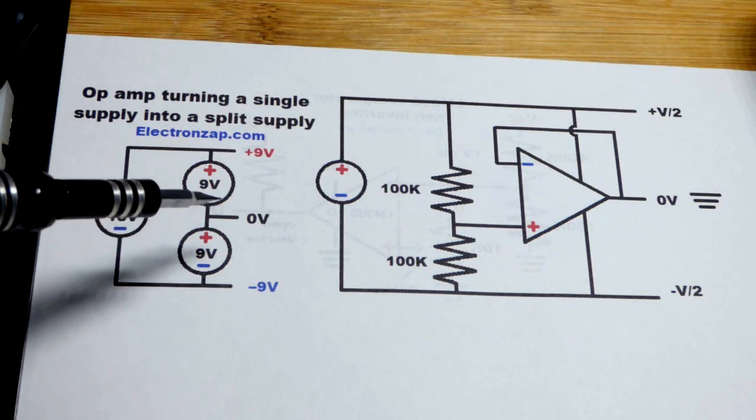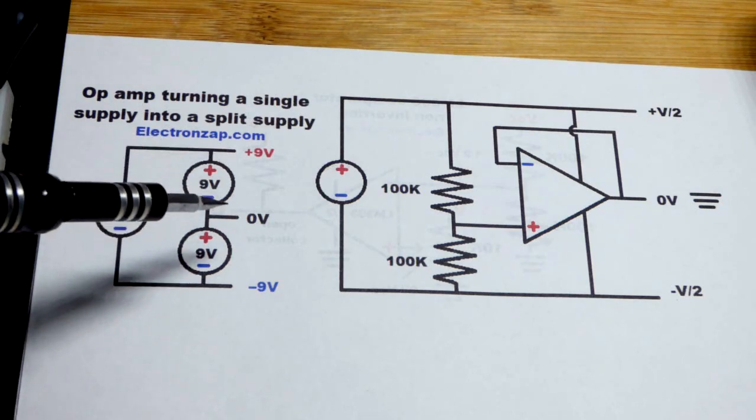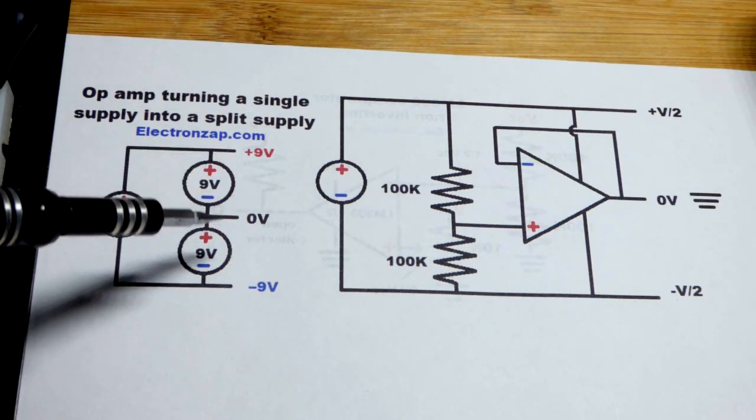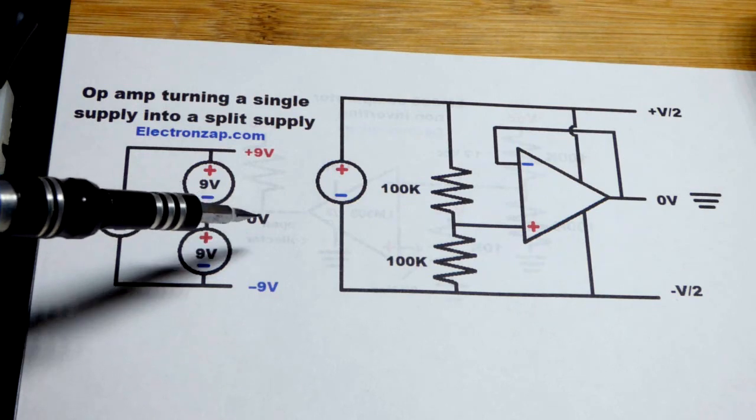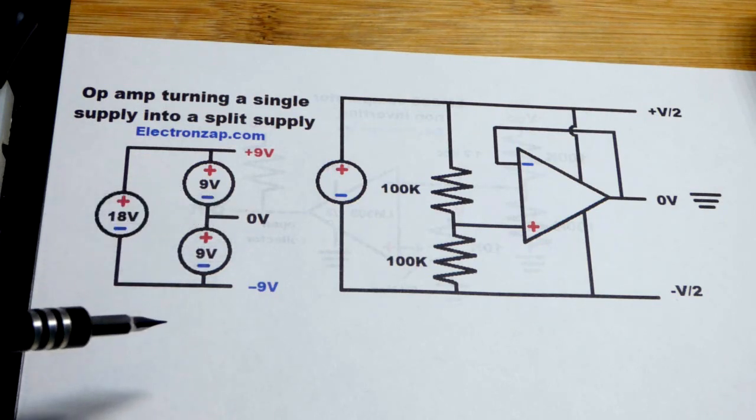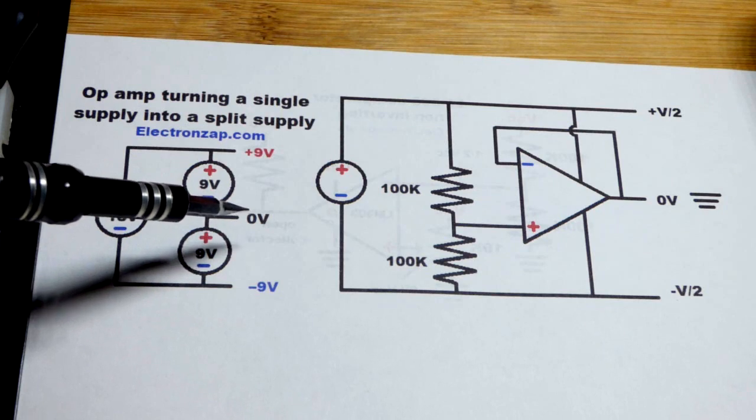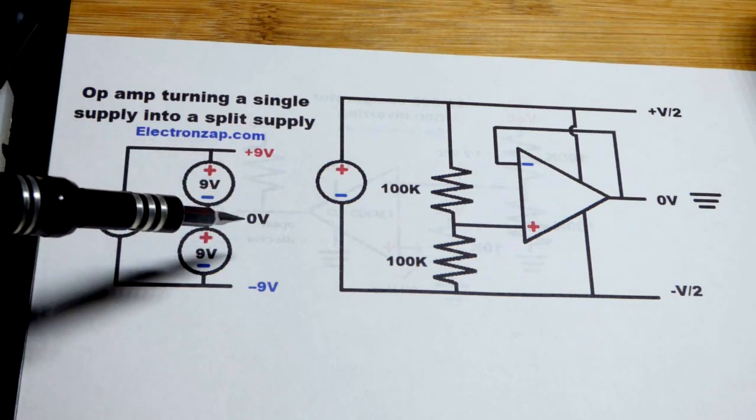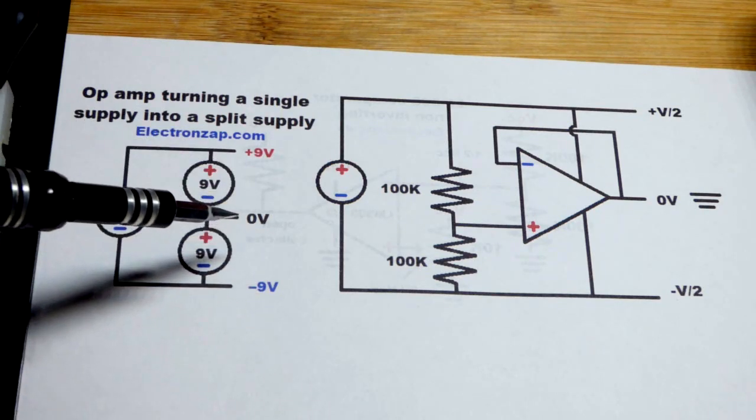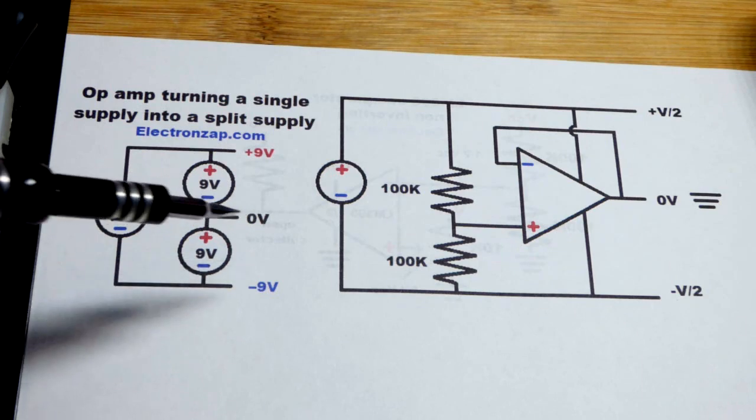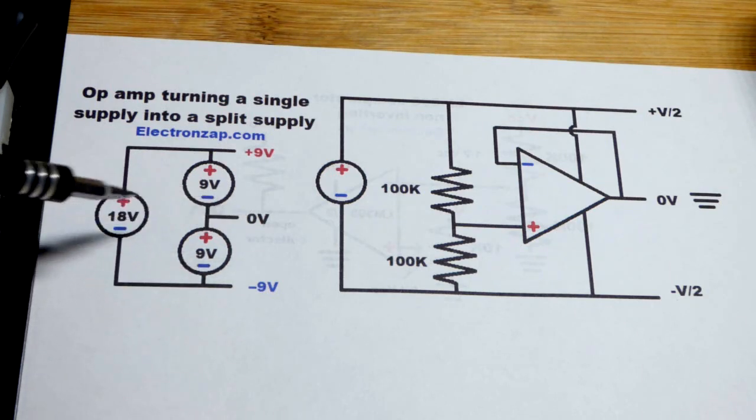You put them in series, take the point where the two connect and declare that's ground—that's your zero volt reference point. Then you have 9 volts positive and 9 volts negative, makes it very easy for alternating current. Basically you took an 18-volt power supply and turned it into a split plus/minus 9-volt supply.